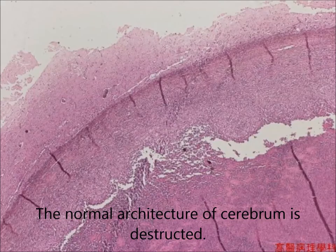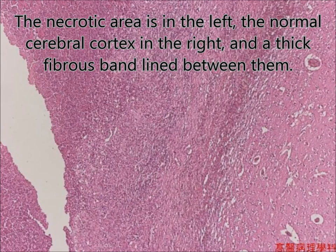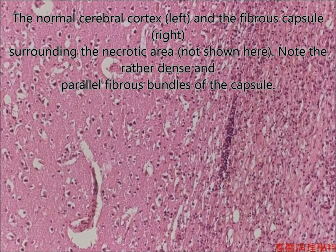The microscopy of the brain shows loss of normal architecture and destruction due to neutrophilic infiltrate. The necrotic area is on the left side and the cerebral cortex on the right side, with a thick fibrous band lining between them, due to the infection. Older sections show peripheral fibrosis.